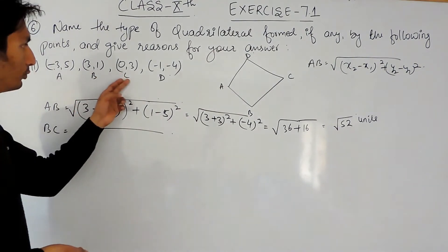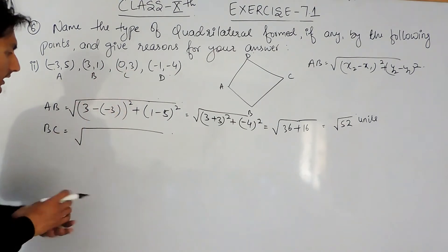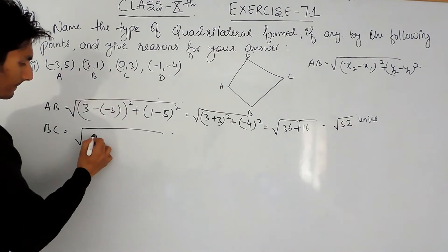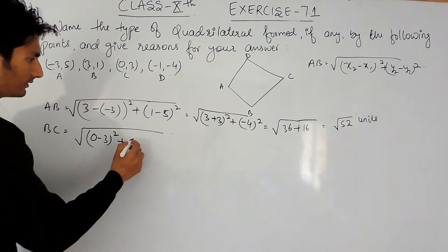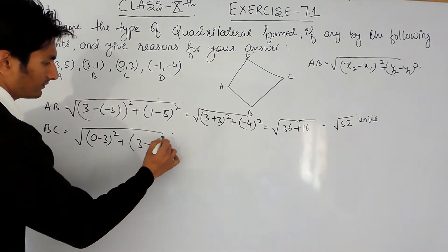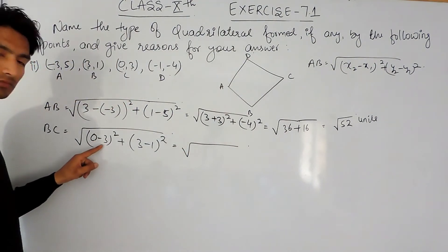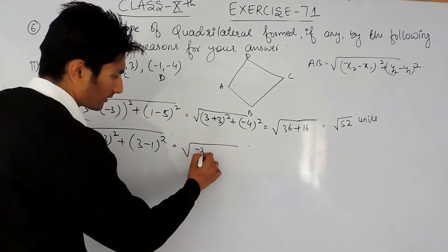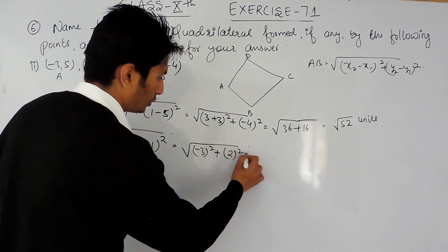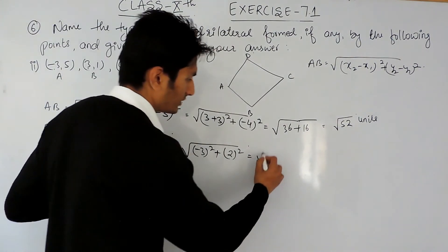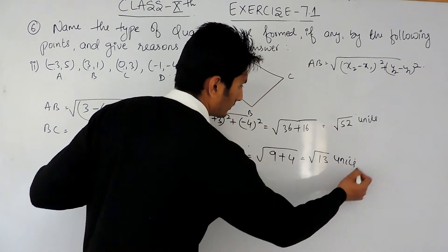Now let's find the distance between the other side, BC. For these two points consider them as (x1, y1) and (x2, y2). Using the same formula: x2 − x1 = 0 − 3 = −3, and y2 − y1 = 3 − 1 = 2. So we get (−3)² + 2² = 9 + 4 = 13. Therefore BC = √13.